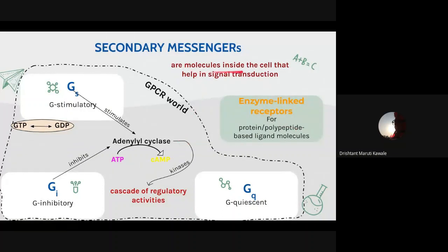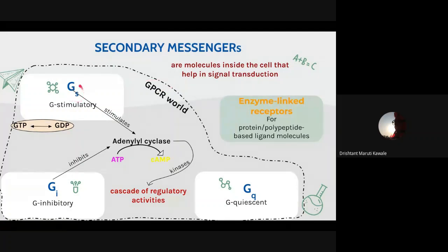Secondary messengers are molecules inside the cell that help in signal transduction — the amplification of a biological or biochemical signal inside the cell. These molecules mediate amplification of the signal after it has been received by the receptor. The major types of secondary messenger systems involve GPCRs and enzyme-linked receptors. GPCRs have three types: Gs, Gi, and Gq. Enzyme-linked receptors are for protein or polypeptide-based ligand molecules.